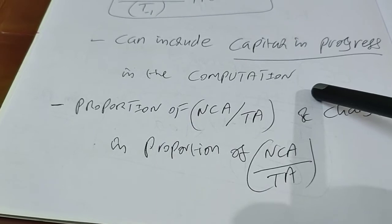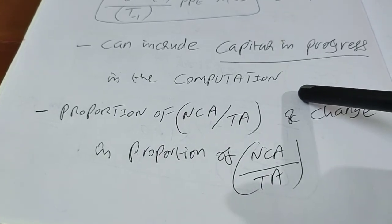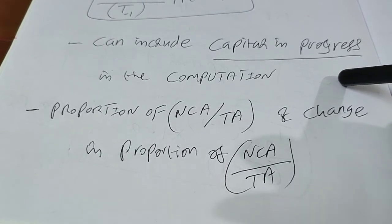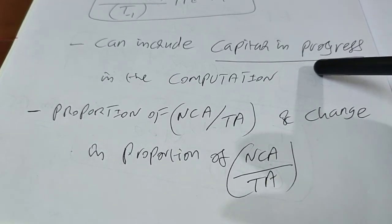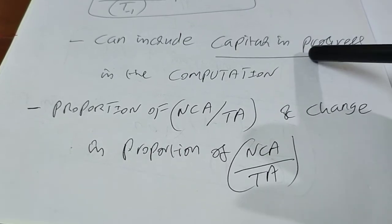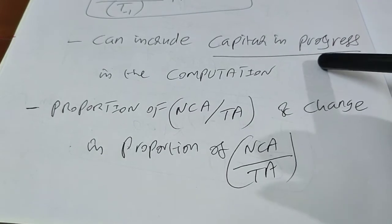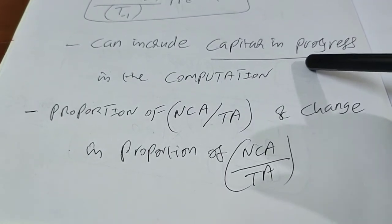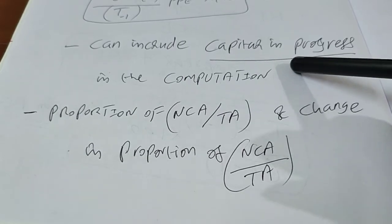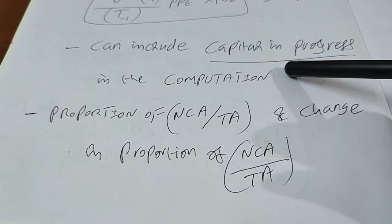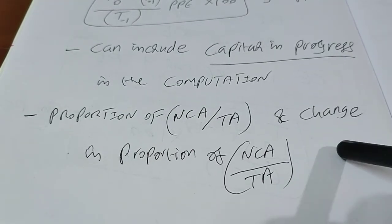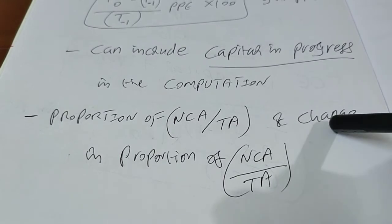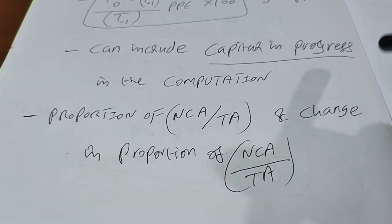You can include capital work in progress in the computation — that is a fixed asset currently being constructed. If you include it for one company, include it for all comparable firms in cross-sectional comparison. Here we are doing time series comparison. Also compute the proportion of non-current assets to total assets and track its change, as there are industries where non-current assets are particularly significant.